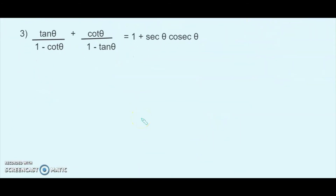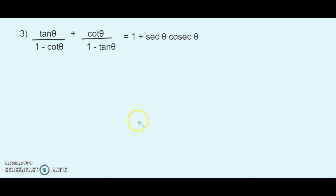For the next question, there is no other way but to write tan as sin/cos and cot as cos/sin. This is a higher order thinking question and there are three key turning points where you have to be very careful about what identity you are applying. The first turning point is changing tan θ and cot θ into sine and cosine.